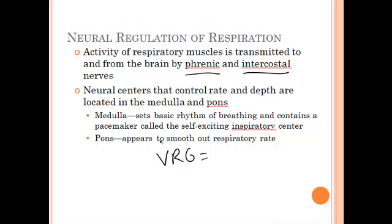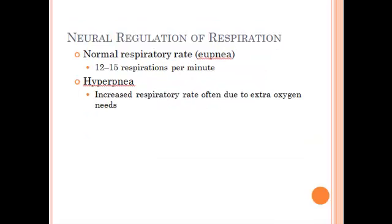These centers can be affected by alcohol. Alcohol can affect the pacemaker — the medulla — and if someone becomes too intoxicated, they can basically stop breathing as it shuts down the medulla, which can definitely be devastating. The normal respiratory rate set by the medulla is about 12 to 15 respirations per minute, and the term for this is eupnea — that's the normal respiratory rate.